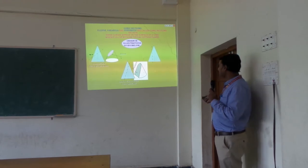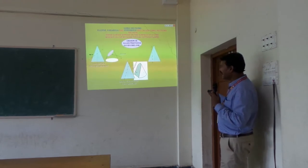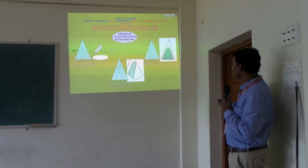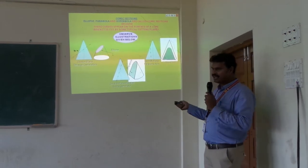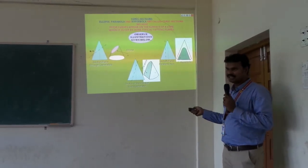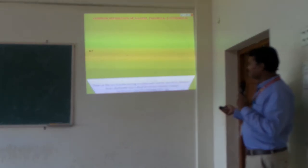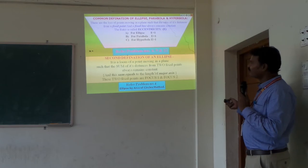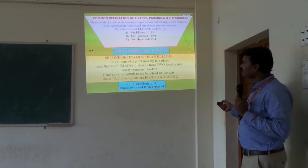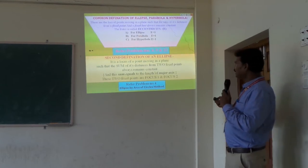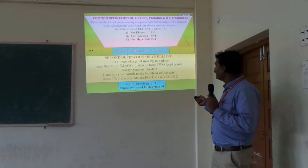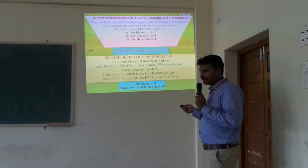The hyperbola is formed when the section plane passes parallel to the axis of the cone. If I remove one portion, the remaining portion looks like a hyperbola. That is why we call these conic sections. From a mathematics point of view, the eccentricity value E is less than 1 for an ellipse, E equals 1 for a parabola, and E is greater than 1 for a hyperbola.